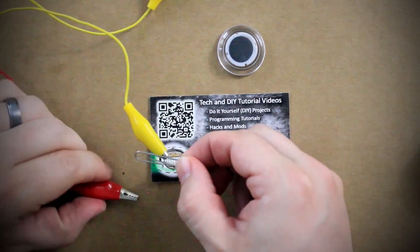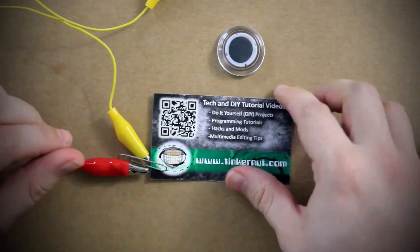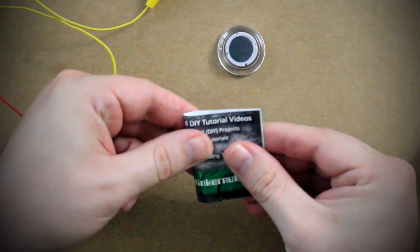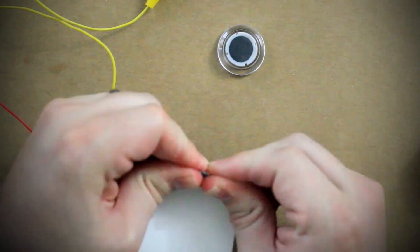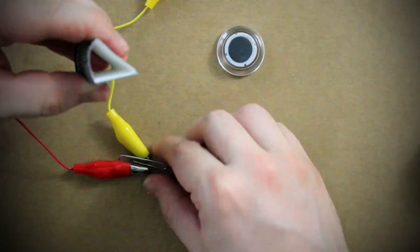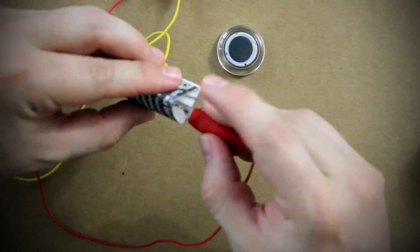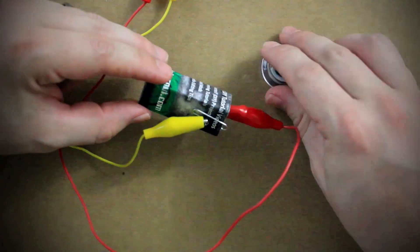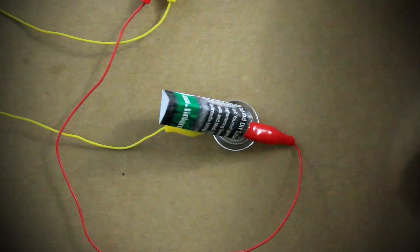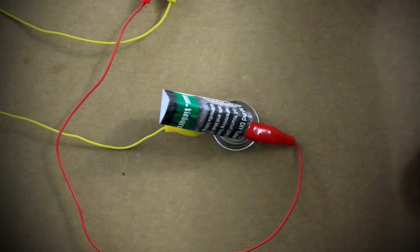Now fold your business card like so to make a triangle and hold it together with the paperclip. Now attach the magnet to the paperclip. Plug it into the headphone jack and start some music. Holding the business card to your ear, you'll be able to hear the music playing.